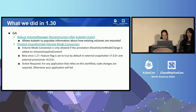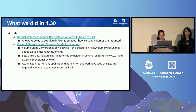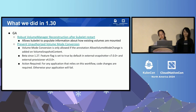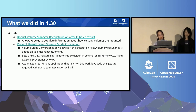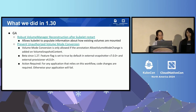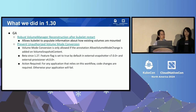In 1.30, we promoted a couple of features to GA. First, we redesigned the way that volume reconstruction works. It's a feature needed to support kubelet restarting — when kubelet restarts, we lose all of the in-memory state about what volumes are mounted and to what pods. We have to reconstruct that state by scanning all of the mount points and volume metadata kept in the node's file system. We completely redesigned this feature to fix a number of bugs and make it more reliable, so scenarios where kubelet restarts or crashes will recover more gracefully.